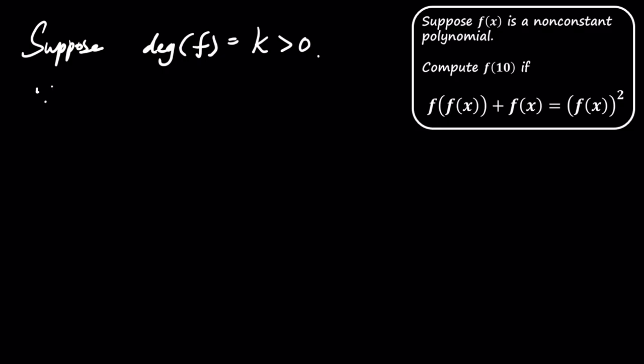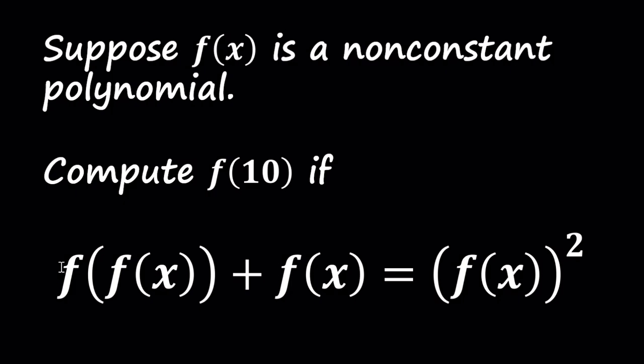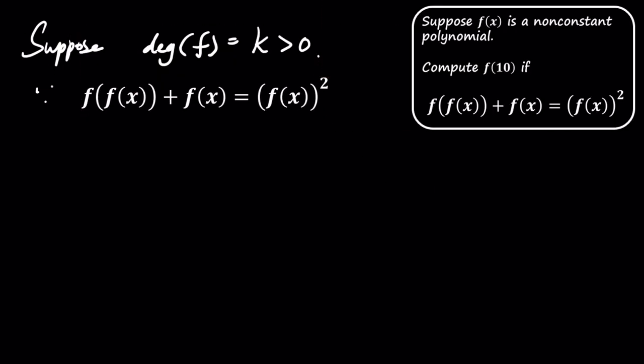Suppose the degree of f is k. From the equation f of f of x plus f of x equals f of x squared, we see that the degree of f of f of x is k squared, and the degree of f of x squared is 2k.